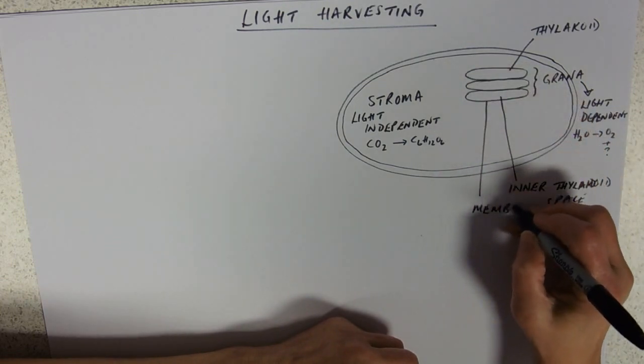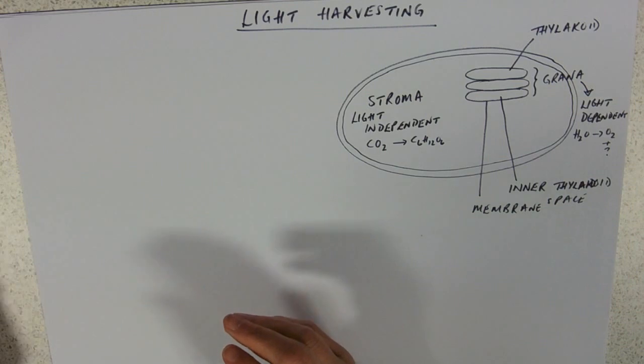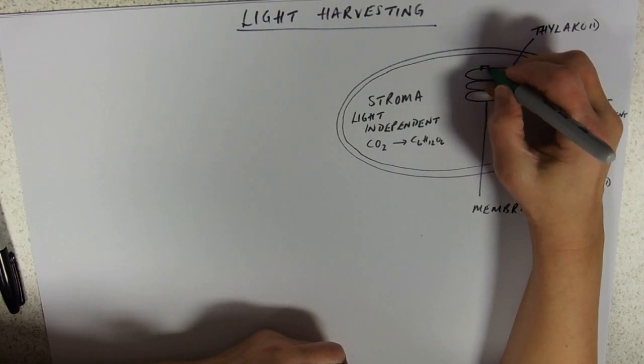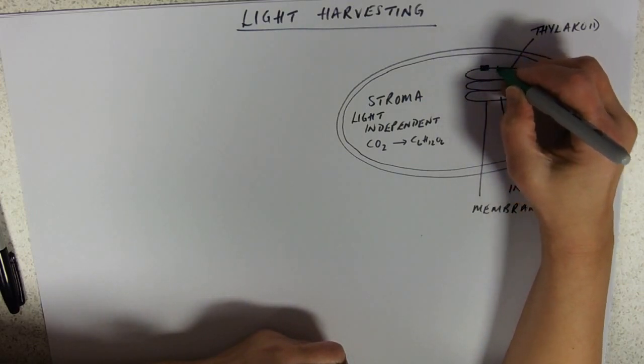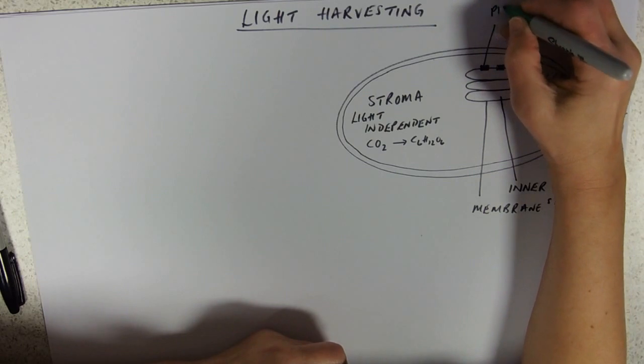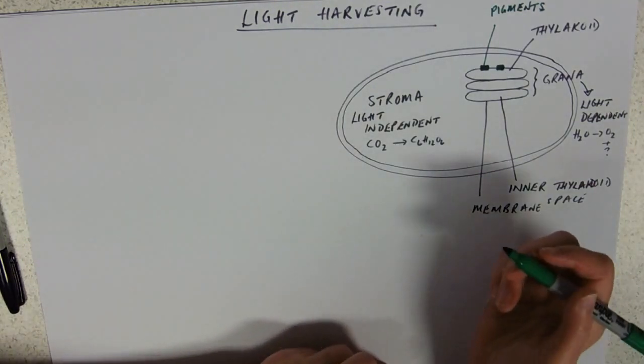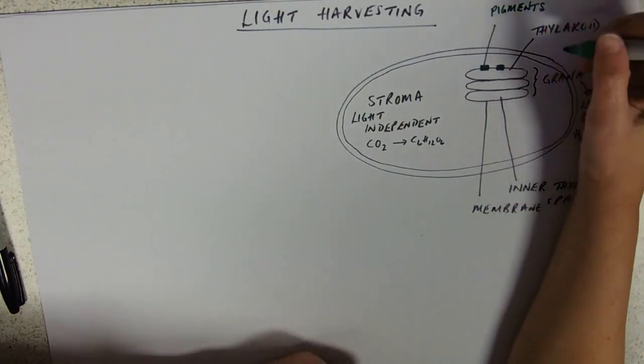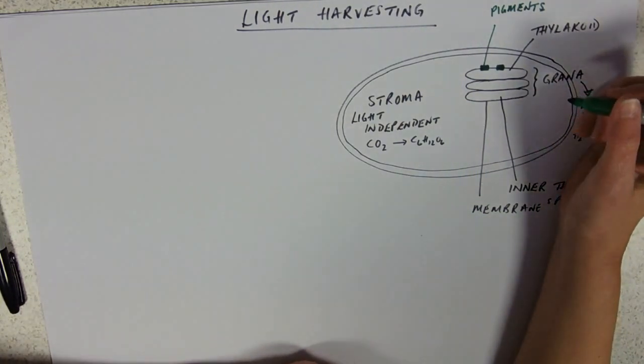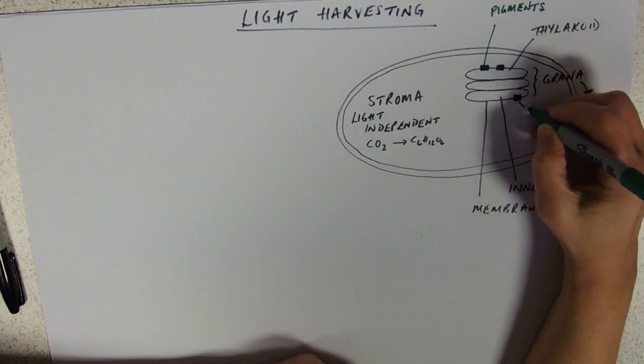When you ask for a precise location, the pigments are actually embedded into that phospholipid bilayer. Notice I've said the word pigments—that means there's more than one, so we're not just going to be talking chlorophyll like you did at GCSE. They're arranged into what's called an antenna complex.